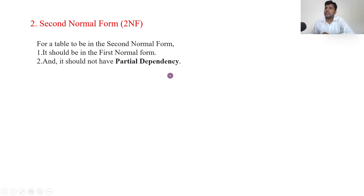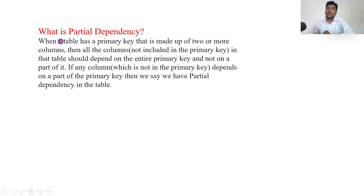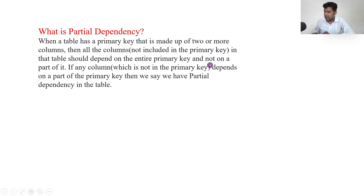For second normal form (2NF): the table should first be in 1NF, and it should not have partial dependency. Let us understand partial dependency first. When a table has a composite primary key — made up of two or more columns — all other columns should depend on the entire primary key. If any column depends on only part of the primary key, that is called partial dependency.